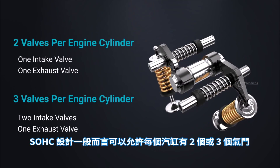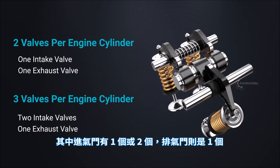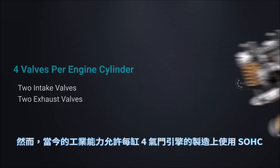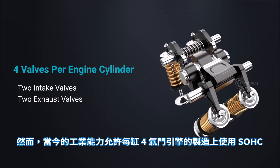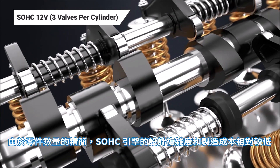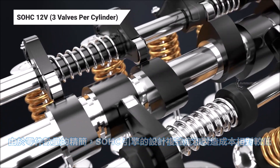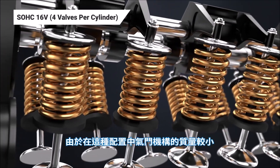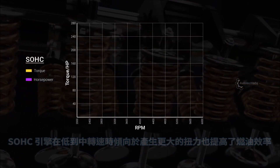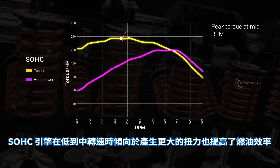SOHC design typically allows a two or three valves per cylinder configuration — usually one valve for intake and one for exhaust, or two valves for intake and one for exhaust. However, current industrial competencies allow production of four valves per cylinder using SOHC. Due to the reduced count of parts, design complexity and manufacturing cost are comparatively low. Since the mass of the valve train is lesser, SOHC engines tend to produce more torque towards low to mid RPM and provide improved fuel efficiency.